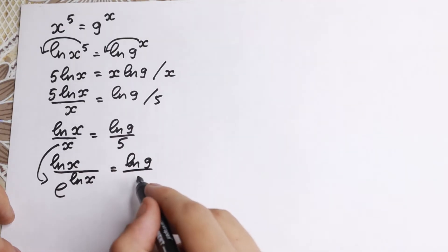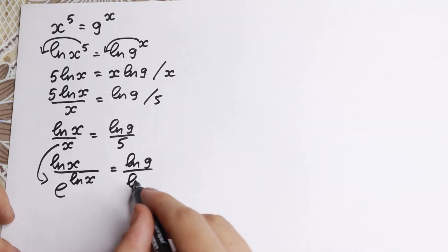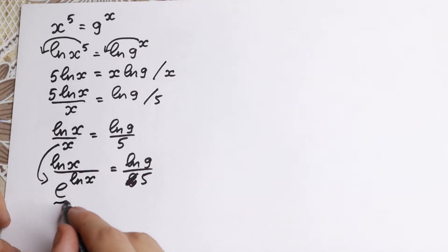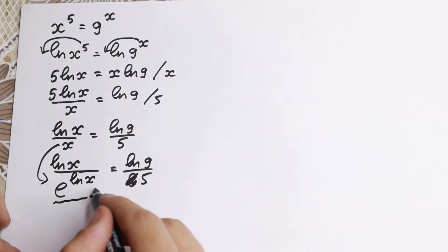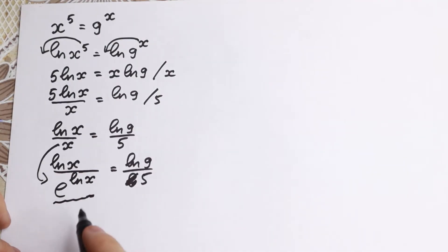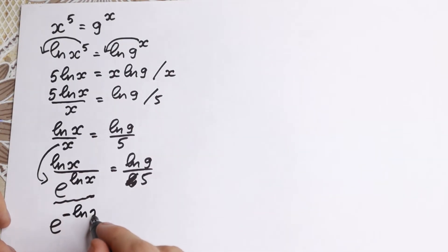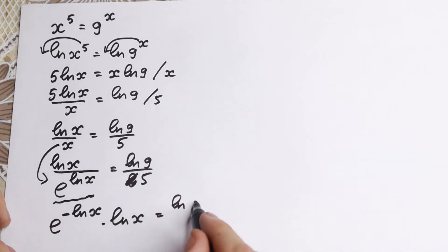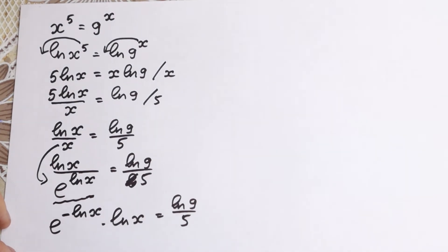So right here we have natural log x over e to the power of natural log x, equal to natural log 9 over 5. Now I want to bring the denominator up to the numerator — if I bring it up, I need to put a minus in the exponent. So we have: e to the power of minus natural log x, times natural log x, equal to natural log 9 over 5.